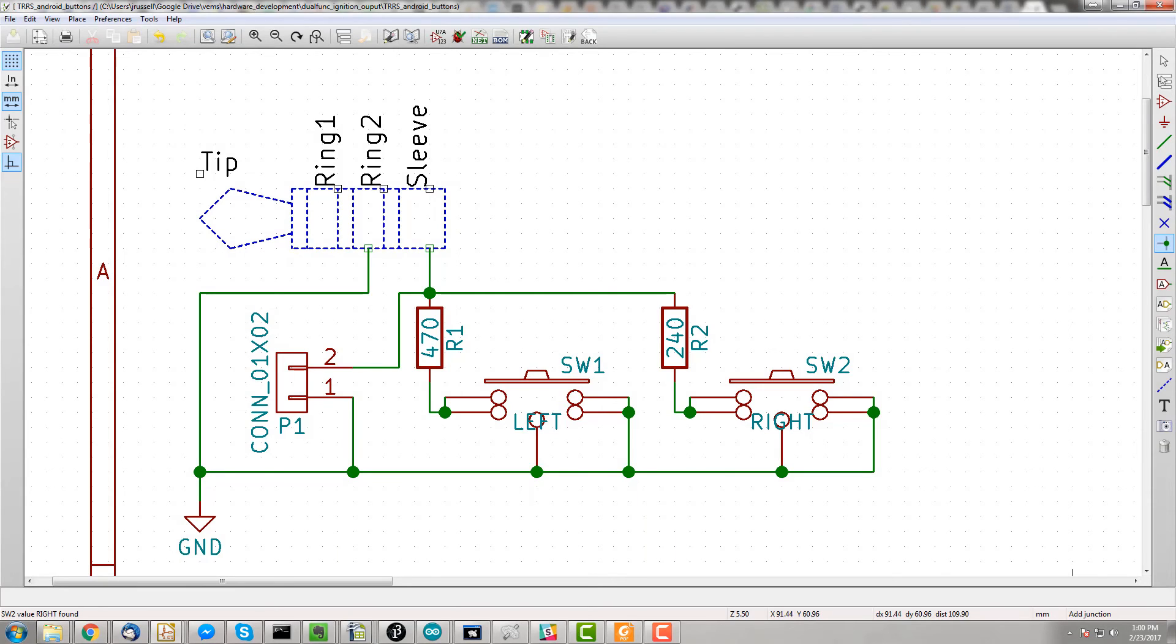So what we're going to start with for this project is a schematic here. If you watched our video previously about the Android app, you'll see that the schematic has changed a little bit, where we just changed the actual footprint of the switches and added a connector here for a couple of wires. They're SMD pads, so just solder on some wires, no through holes.